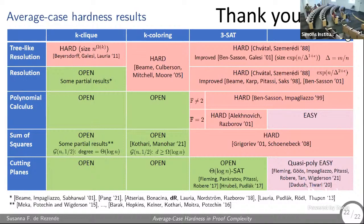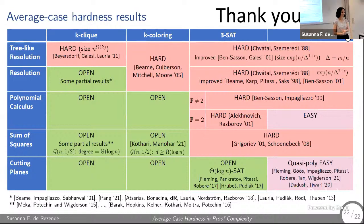Regarding the question about whether there are known instances where k-clique is algorithmically hard but easy to prove: no, I don't know of any such instances. I think it's an interesting open problem.